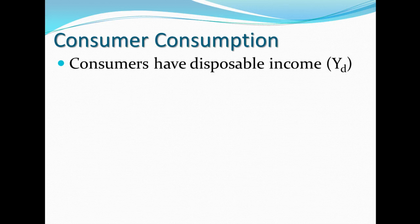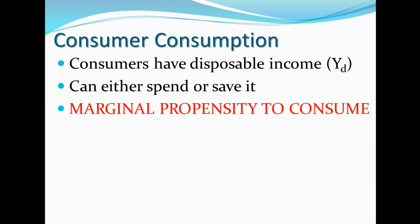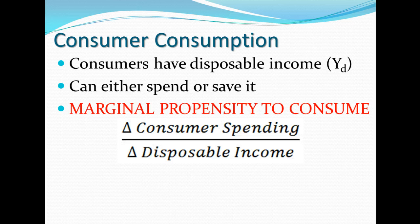Consumer consumption: consumers have disposable income, we call this Y because I is taken for investment, so they used Y for income. You can either spend this money or save it. Some portion of it, if you spend it, is called the marginal propensity to consume. It just means that of the extra money you have earned, you have spent it. This is measured with the change in consumer spending over the change in disposable income.